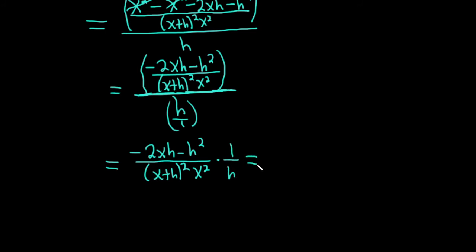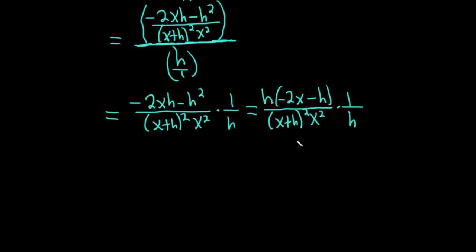And so now the magic happens. We can pull out the h here. So h(-2x - h), right? Because h times h is h². h times 2x is 2xh. Everything looks okay here. We've just pulled out an h over (x+h)²·x² and then times 1/h. Oh, look at that. Look at that. These go away.